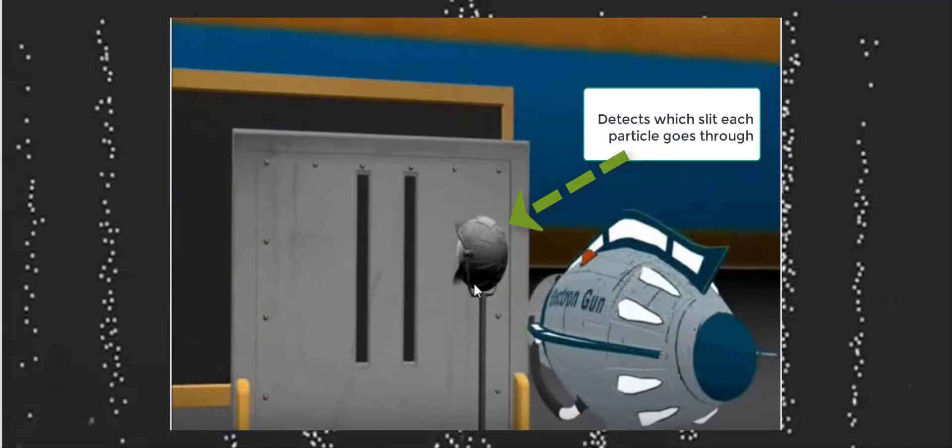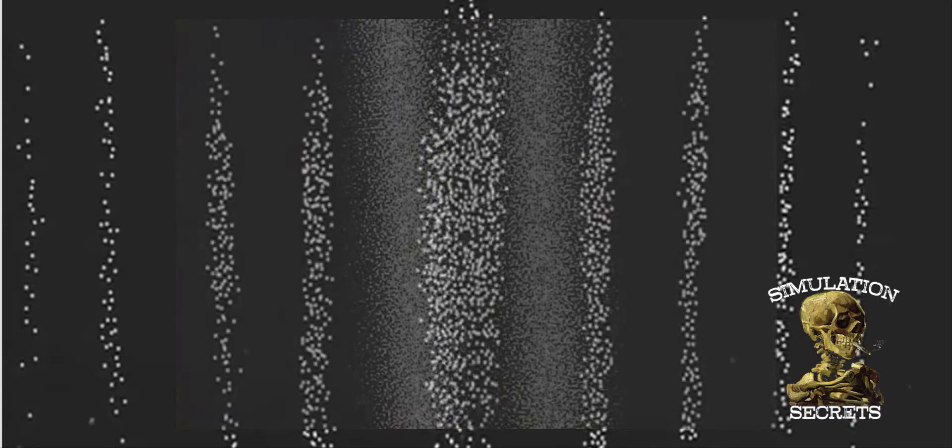Then they decided to measure which slit the marble or particle went through. The act of being observed or measured caused a particle to act the way that a particle should.